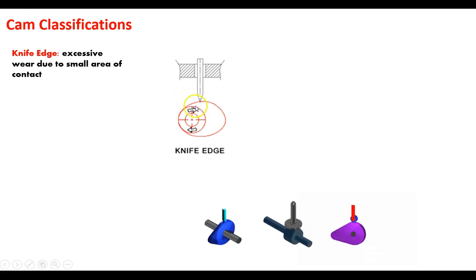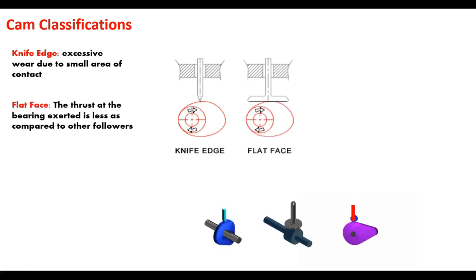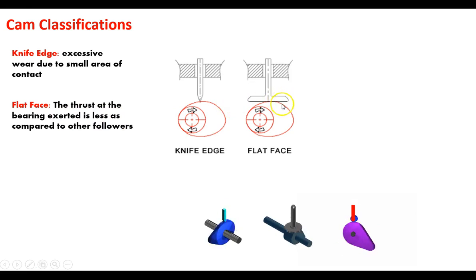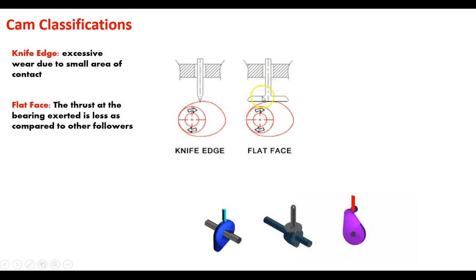Another type is the flat-face follower, where the bearing or thrust force exerted is less than compared to other followers. So the force going up is a little less compared to other followers, and you get a little less wear.